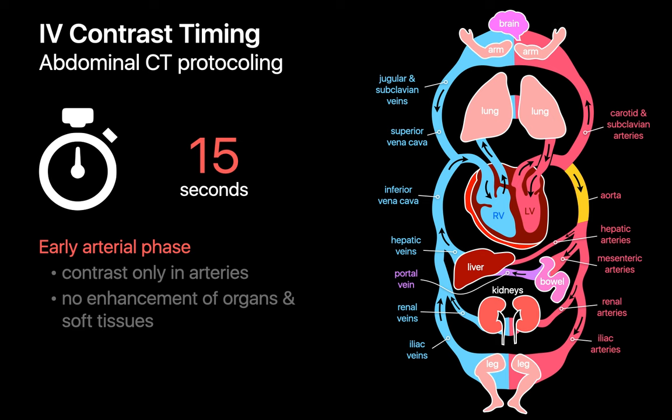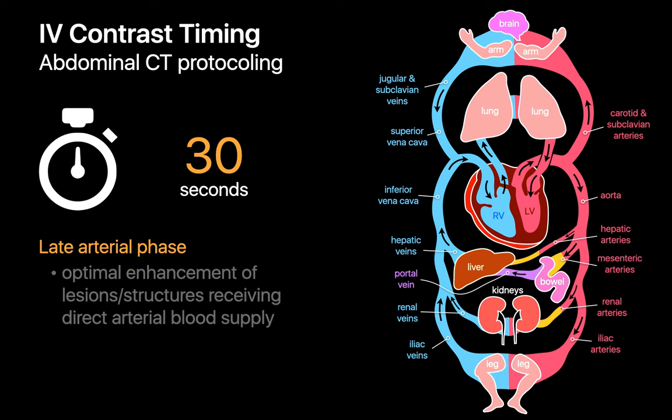We refer to this as the early arterial phase of enhancement. At this point, contrast is only present in the arteries and there is little, if any, enhancement of the organs and other soft tissues in the abdomen, which makes for clean CT angiograms to look at and for vascular software tools to work on. At 30 seconds after injection, contrast has entered the visceral arteries of the abdomen, such as the hepatic arteries, mesenteric arteries and renal arteries, and the enhancement of the organs they supply has begun.